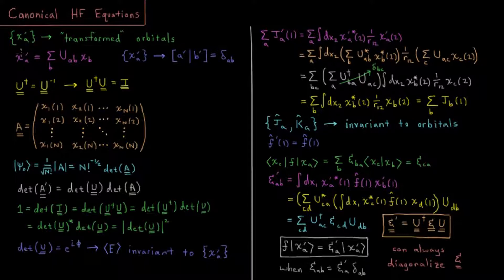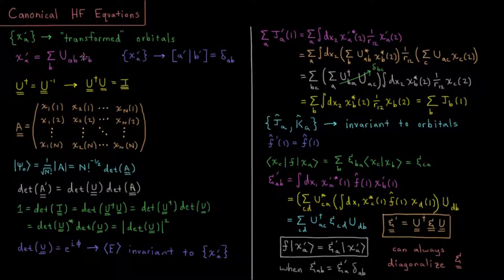If we have some set of spin orbitals chi-a and then we apply some transformation to them, we can end up with what we call a set of transformed orbitals chi-a prime. We do this by taking some initial chi-b — the set of all the initial orbitals — and applying some linear combination to them, multiplying by some coefficient and adding up to get the new transformed orbitals. We can do this because it's assumed that whatever spin orbitals we have, the set of those spin orbitals is complete. That is, we can represent any three-dimensional function as a linear combination of those spin orbitals, so any set of spin orbitals can be expressed as a linear combination of our initial set.